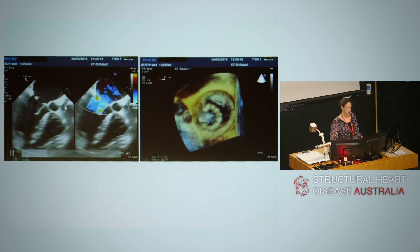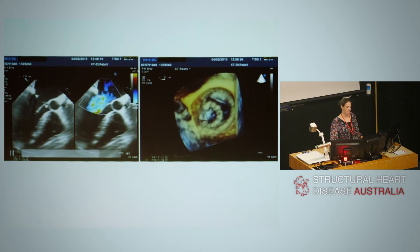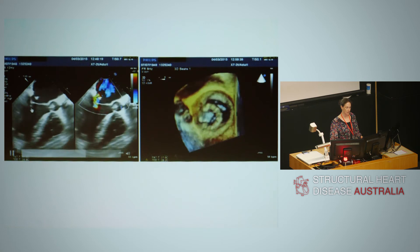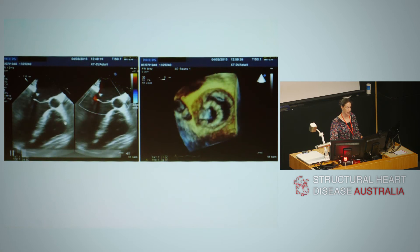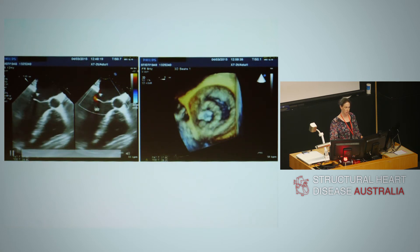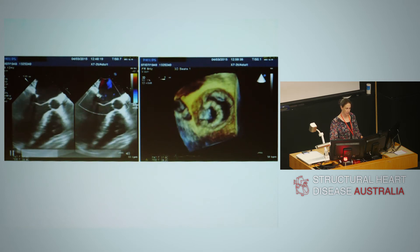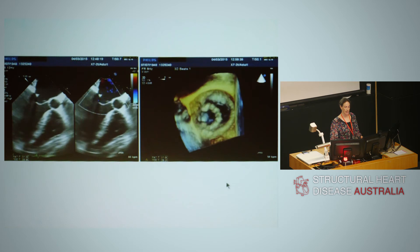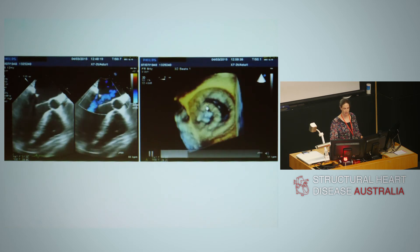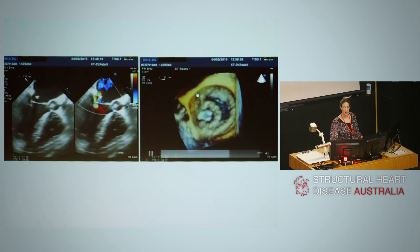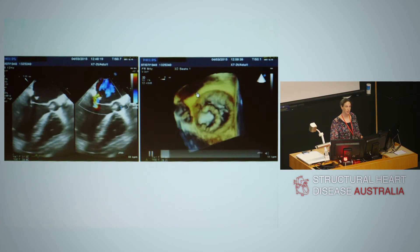Another transesophageal image — an outflow tract view with aorta, A2 and P2. There's a relatively restricted posterior leaflet and an unusual jet orientation, arising from the leaflets but moving along the side of the annuloplasty ring. 3D shows there has been partial dehiscence of this annuloplasty ring and severe mitral regurgitation.